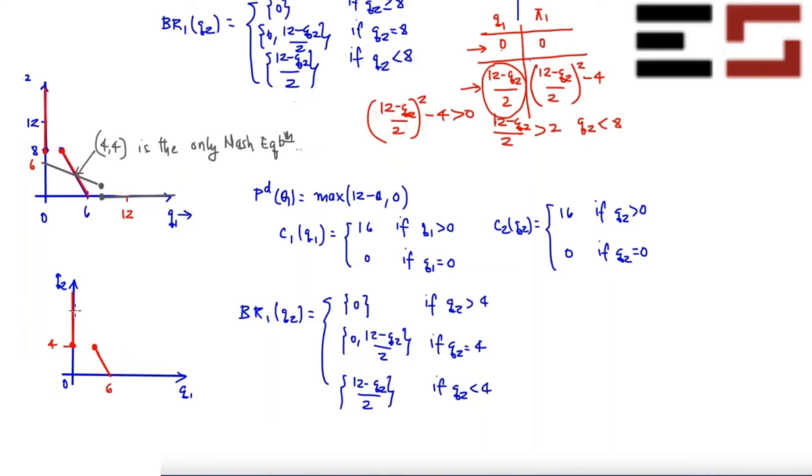So this is basically four and this is six. And if you go on like this, you will hit 12. So notice that there are three Nash equilibrium. One is (6,0) and then you have (4,4) and then you have (0,6). Is that clear?